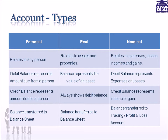A personal account relates to any person — individual, group of persons, or an artificial person like a company. It may show a debit or credit balance. The balance represents an amount due to a person when it is a credit balance, and due from a person when it is a debit balance. A real account relates to assets and property and would almost always show a debit balance representing the value of the asset; these balances are transferred to the balance sheet. Finally, the nominal account relates to expenses, losses, incomes, and gains. A debit balance represents an expense or loss, while a credit balance represents an income or gain; these balances are transferred to the profit and loss account.